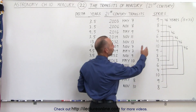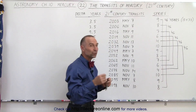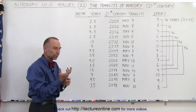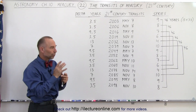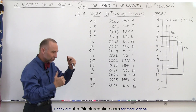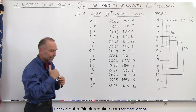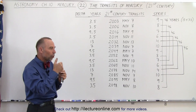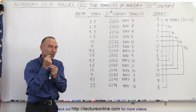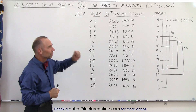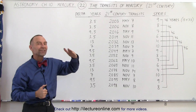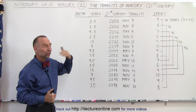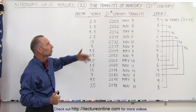Over here, we have what we call the series. Because of the combination of the orbital time of Mercury and the orbital time of the Sun and the positions of the Earth, the Sun, and Mercury, we can actually see almost duplications of when certain transits will occur. We put those in a series, and all of them are 46 years apart. Every time a new series starts, we start with a new series number.